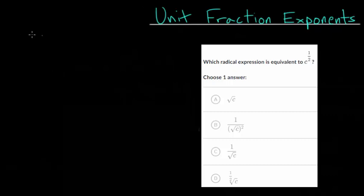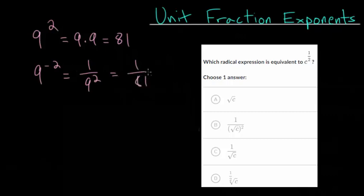So we've seen with exponents before that if we have the number 9 and we square it, a positive exponent is just repeated multiplication. And we've also seen that if we have a negative exponent, this is just repeated division. We would divide by 9 twice here and you'd get 1 over 81.